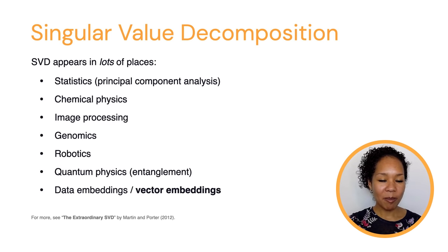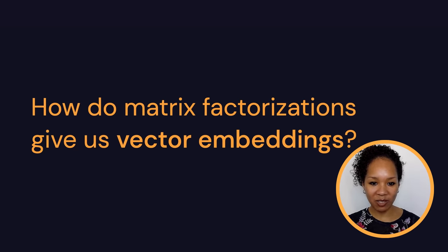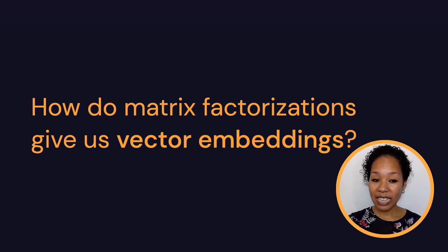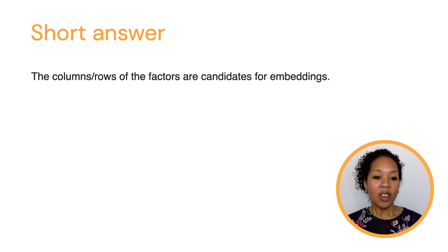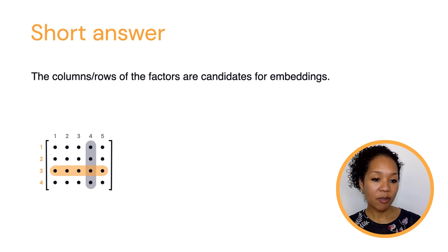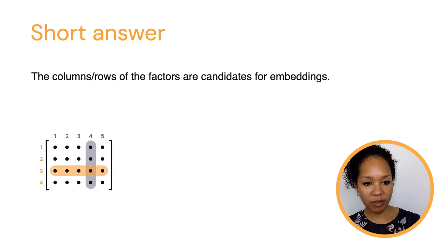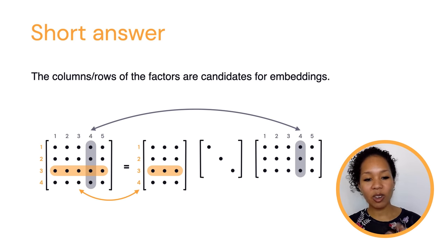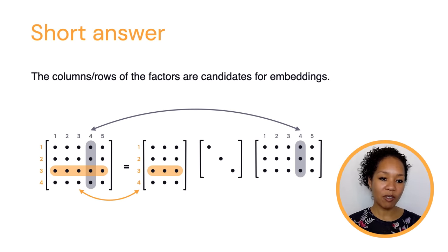Why am I mentioning this? We were talking about matrix factorizations in the context of vector embeddings. I have a vector — a data representation — and I want a better version of it. Matrix factorization is a way to do this. The punchline is that your vector embeddings are given by the rows or columns of the matrices in your factorization. You can imagine starting with a vector with, say, five entries — the orange row on the left — and looking at a factorization, then looking at the corresponding row of one of my matrices. It has fewer entries. That new vector is the candidate for my embedding of the original vector.